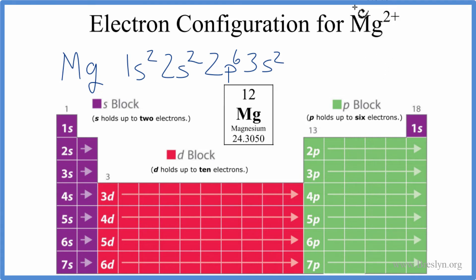that 2+, that means it lost 2 electrons. When you lose 2 electrons, since electrons are negative, you have a positive, a 2 plus charge. So with Mg2+, we just need to lose 2 electrons. We'll get rid of the 3s2 electrons.